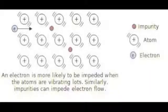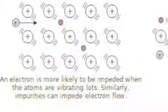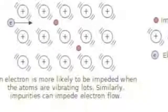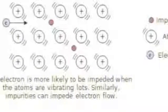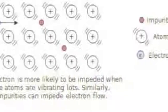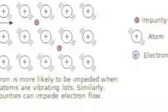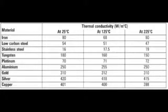Resistance is largely caused by atomic vibrations. At a lower temperature, there are fewer atomic vibrations, therefore reducing resistance. This is illustrated in the table shown — every material has a higher conductivity at a lower temperature. Impurity also causes resistance because there is a higher rate of electron collision.